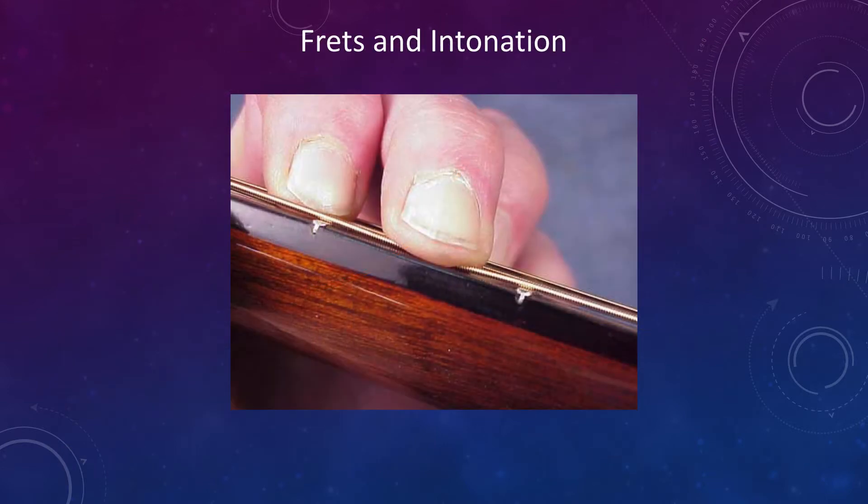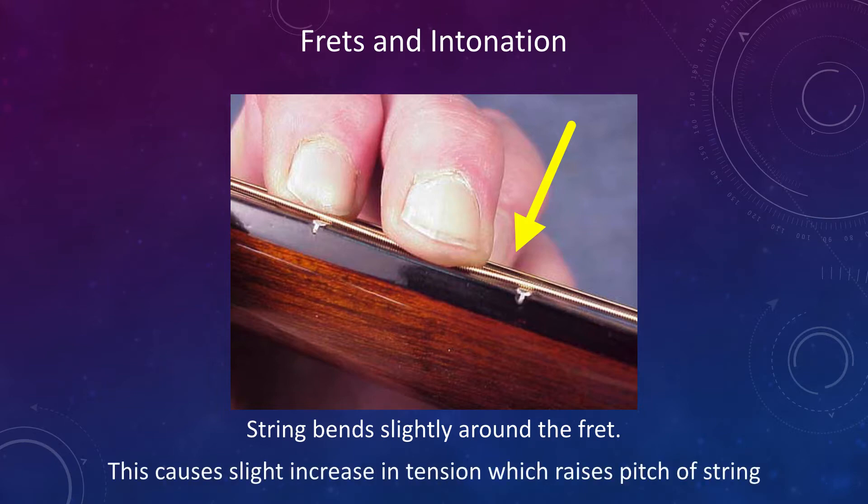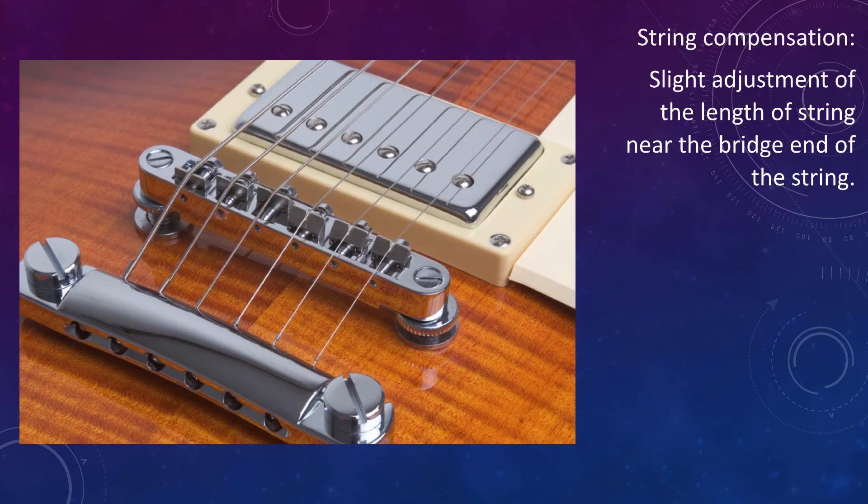Fretted string instruments have a small issue regarding intonation. When a player presses on the fretboard, the string bends slightly around the fret. This changes the tension of the string enough so that the pitch rises and makes the instrument slightly out of tune. So guitars have to have string compensation. This is a slight adjustment of the length near the bridge end of the string.